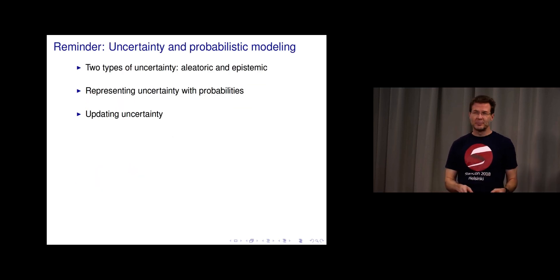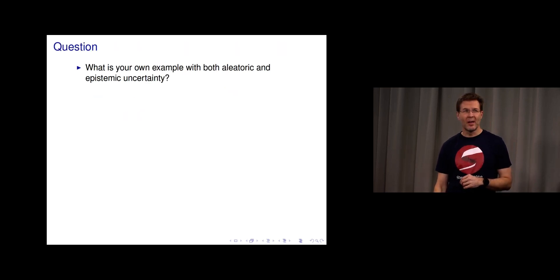So in this clip I talked about two types of uncertainty, aleatoric and epistemic, a little bit about using probabilities and updating uncertainty, and more about those later.